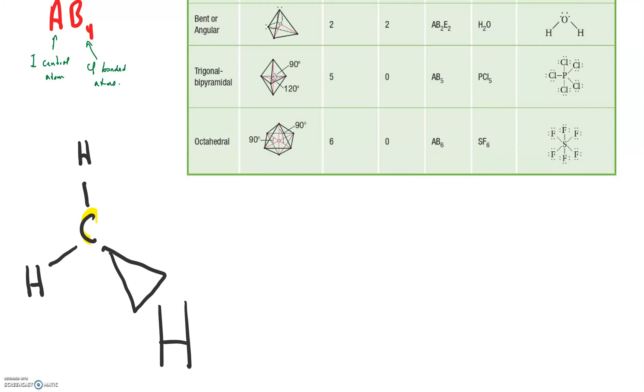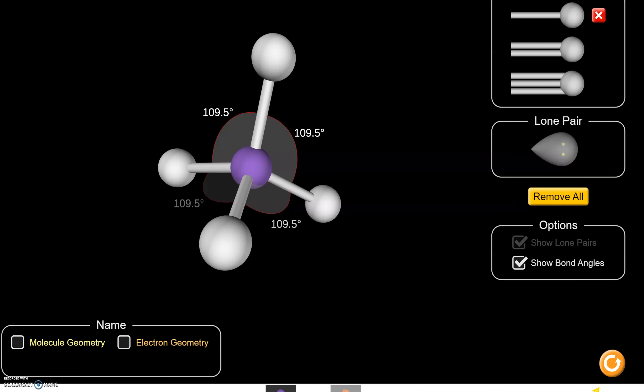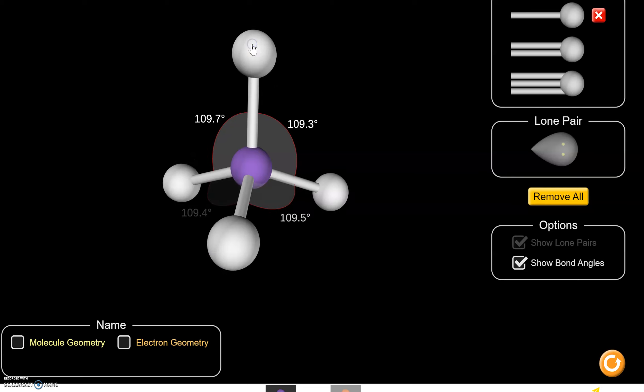So to show three dimensions, I'm going to use this wedge shape to indicate a hydrogen that's coming out at us, and I'll draw it a little bit bigger. And then the terminology uses a kind of a dotted line to show that this hydrogen is going away from us into the screen. So this shape is trying to show this shape. I don't know if you see it or not, but that's what we're trying to do.